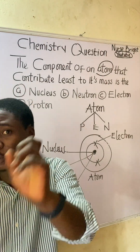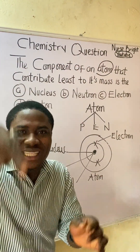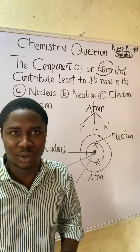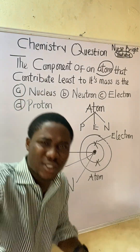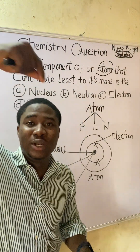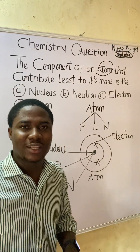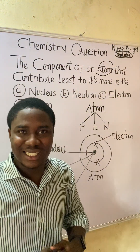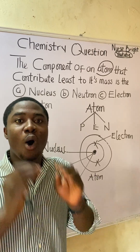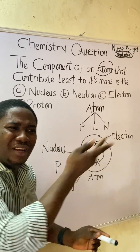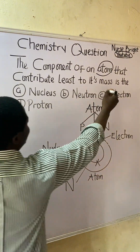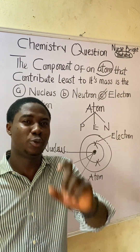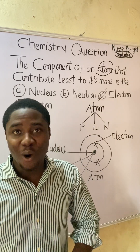Which subatomic particle contributes least to the mass of an atom? It is the subatomic particle that is not found inside the nucleus. And what is that? Electron. Electrons have nothing to do with the mass of an atom because they are not found inside the nucleus — they just revolve around it. It is protons and neutrons that contribute to the mass of the atom, not the electron. So the answer to this question is option C, because it is the electron that contributes least to the mass of an atom.